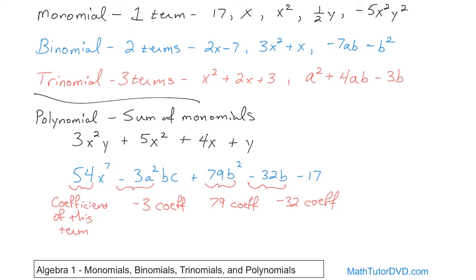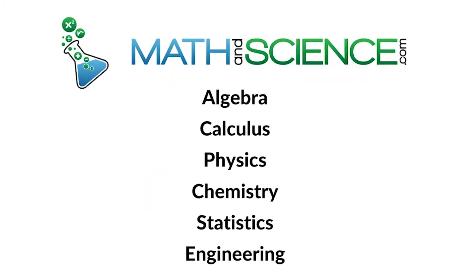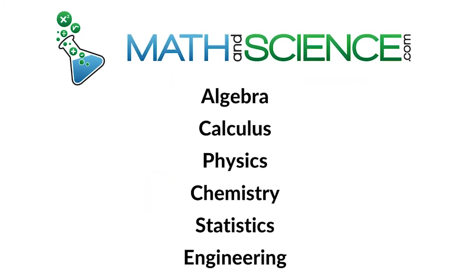This is in front of x to the seventh power; this is in front of b squared; this is in front of a squared bc. Typically, you only talk about coefficients when they're in front of a variable. So if I ask you what is the coefficient of the third term, the answer is 79. You need to learn, when reading polynomials, what the coefficients are. Make sure you understand the difference between a monomial, binomial, trinomial, and polynomial. Follow me on to the next lesson — we're going to continue discussing polynomials in algebra at mathandscience.com.